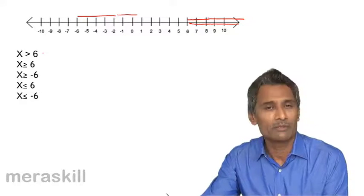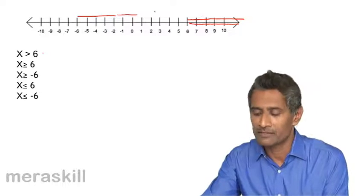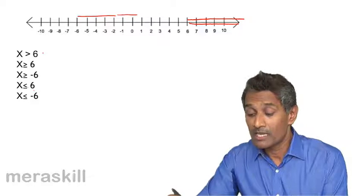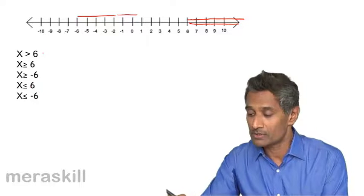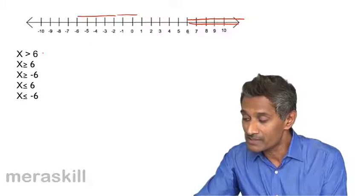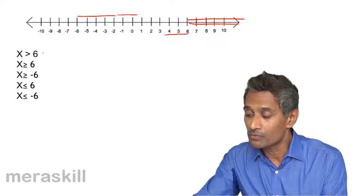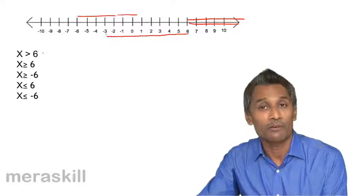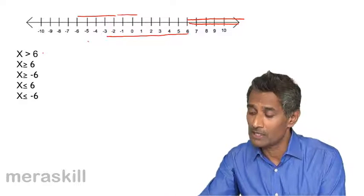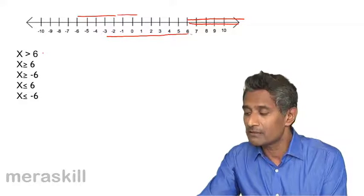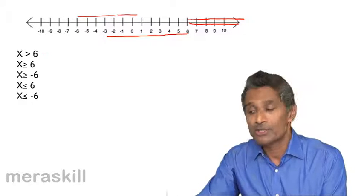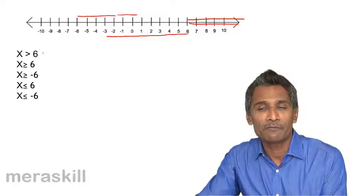Similarly, if you say x is less than or equal to 6, we start from 6 here and then we move like this to the left of it, because as we move to the left, the number becomes smaller. So from 6, when we move toward the left, it covers all the numbers which are either 6 or less than 6. All this is less than 6.